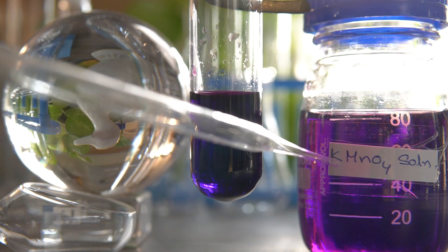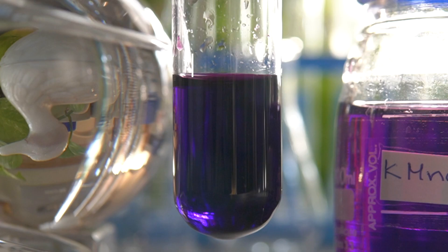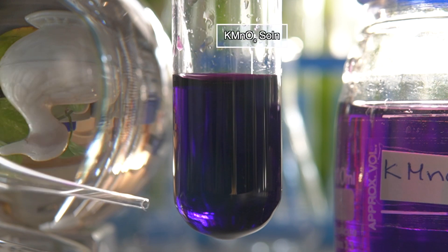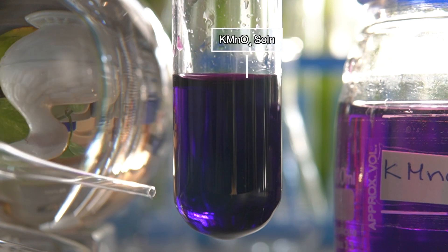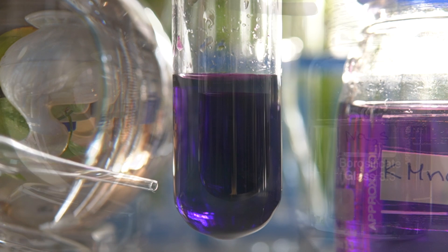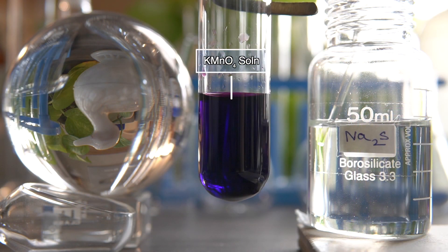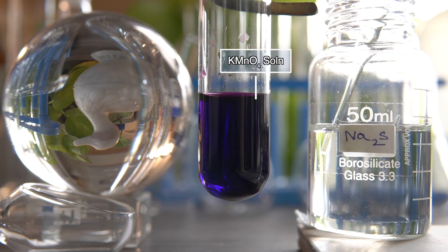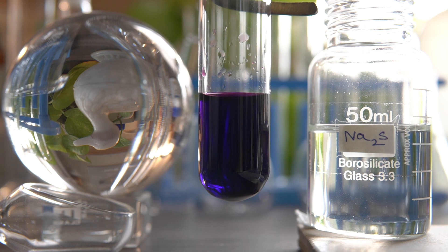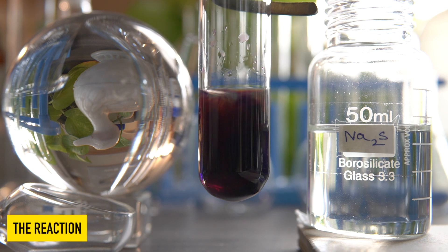To initiate the chemical reaction, we will take some amount of potassium permanganate into this test tube. Now we will add a clear solution of sodium sulphide into the purple solution of potassium permanganate and observe the effects.